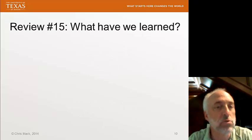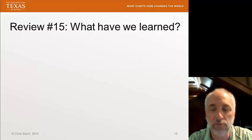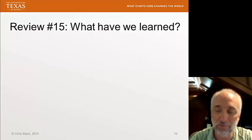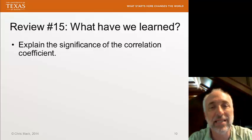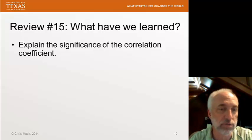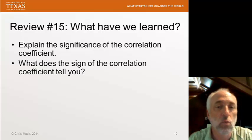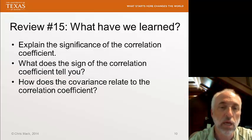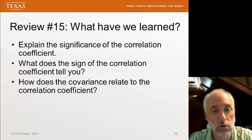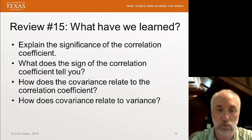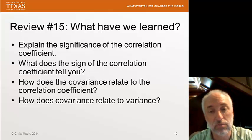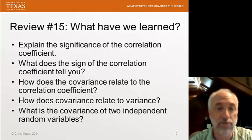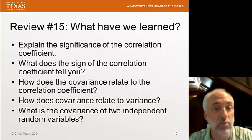So, let's review lecture number 15. What have we learned? As always, you should be able to quickly and easily answer these questions. If not, you need to go back and review the material again. Explain the significance of the correlation coefficient. What does the sign of the correlation coefficient tell you? How does the covariance relate to the correlation coefficient? How does covariance relate to variance? And finally, what is the covariance of two independent random variables?